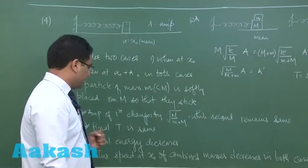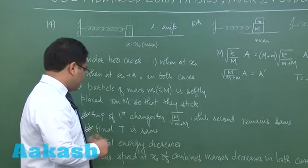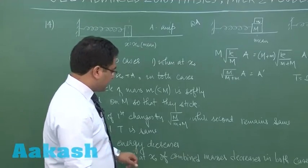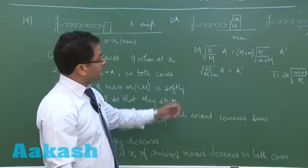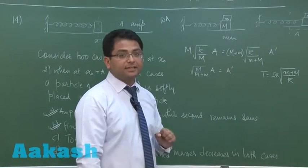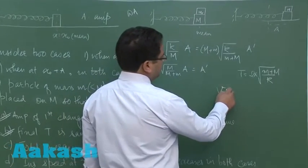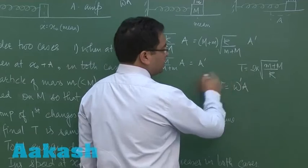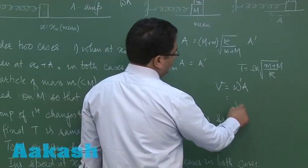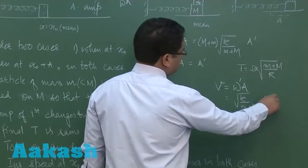So option number c would be incorrect because in both the cases energy is not decreasing. And d, instantaneous speed at x0 of combined masses decreases in both the cases. For the first it is already decreasing. Now for the second what would be the velocity? That would be omega times a. Now omega would be new and the new omega would be k by m plus m while the amplitude is same.